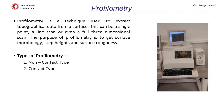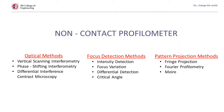The next method is profilometry. It is a technique to extract topographical data, that is surface data, and it can be done with single point or line scan method or with a full 3D scan method. The purpose of profilometry is to get the surface morphology and the surface roughness. There are two categories: non-contact type and contact type. Since we are focusing on non-destructive tests, here are a few non-contact profilometry methods, divided into three: optical method, focus detection method, and pattern projection method.